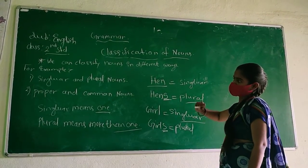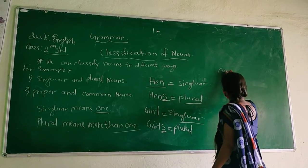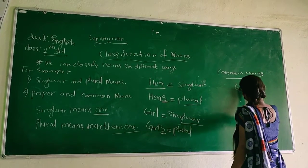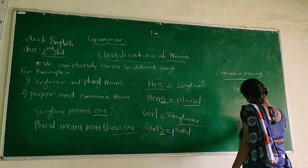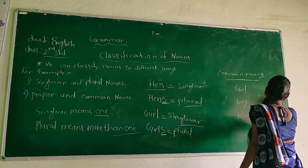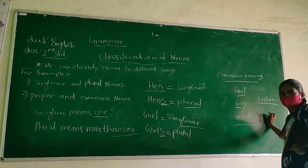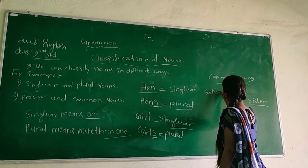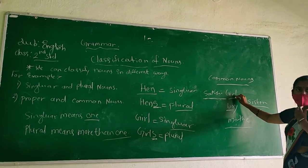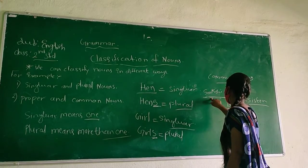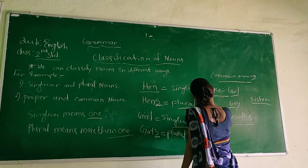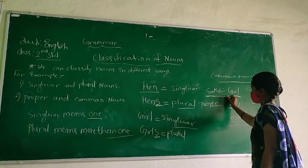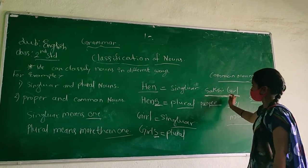And proper and common nouns means what? Common nouns means like girl, boy, mother, sister — these are common nouns. Sakshi or girl — this name, Sakshi, is a proper noun. This is a common noun and this is a proper noun. Joy is also a proper noun.